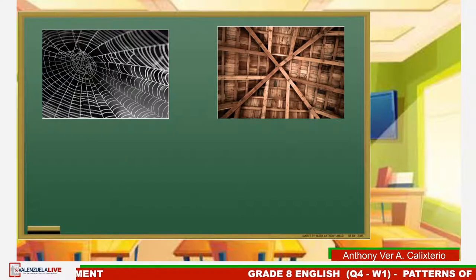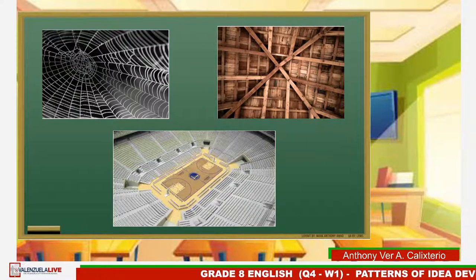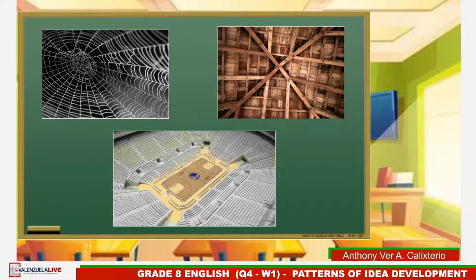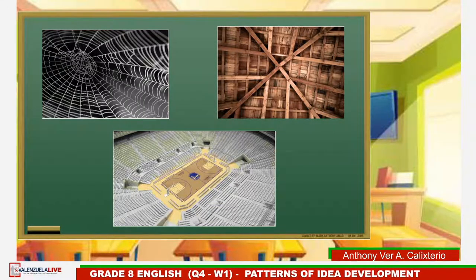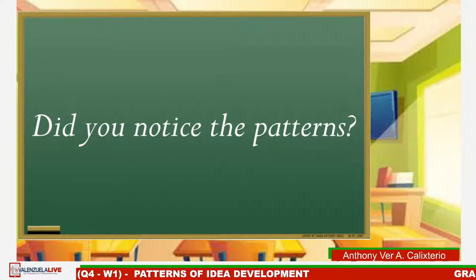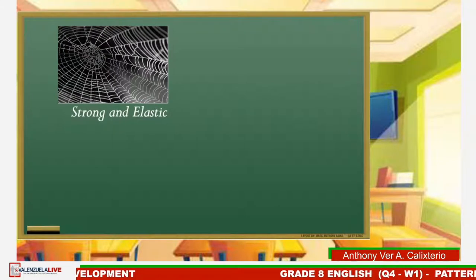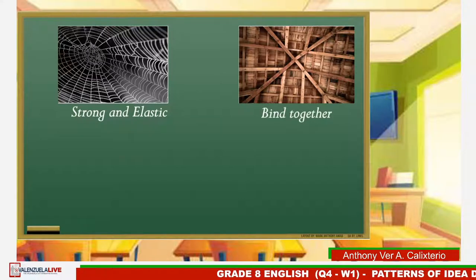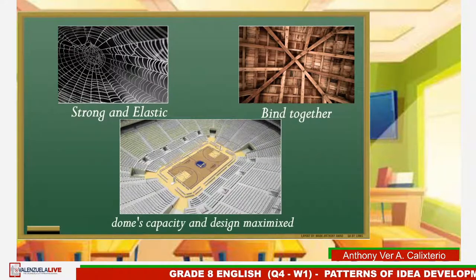Look at these images: a spider web. Notice the patterns a creature has made to make it organized. The ceiling of a nipah hut and the arrangements of seats in the Chase Arena in downtown Golden State. Did you notice the patterns? These patterns are made for a purpose: to make the web strong and elastic, the ceiling of the nipah hut bind together, and the dome's capacity and design maximize.